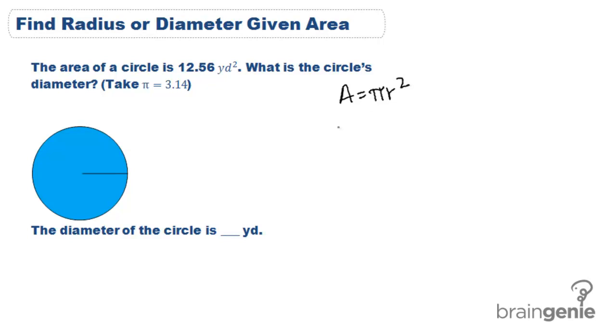This says that the area is equal to 12.56 yards squared and asks us to find the diameter if we assume that pi is equal to 3.14.